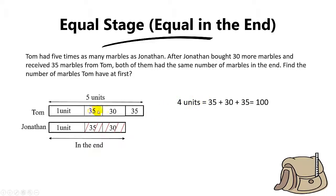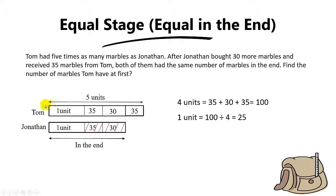So four units equals 35 plus 30 plus 35, which is 100. One unit equals 100 divided by 4, which is 25. Now be careful — this is the part where students make mistakes. Read the question carefully. To find the number of marbles Tom had at first, Tom has five units, so five units equals 25 times 5, and the final answer is 125 marbles.